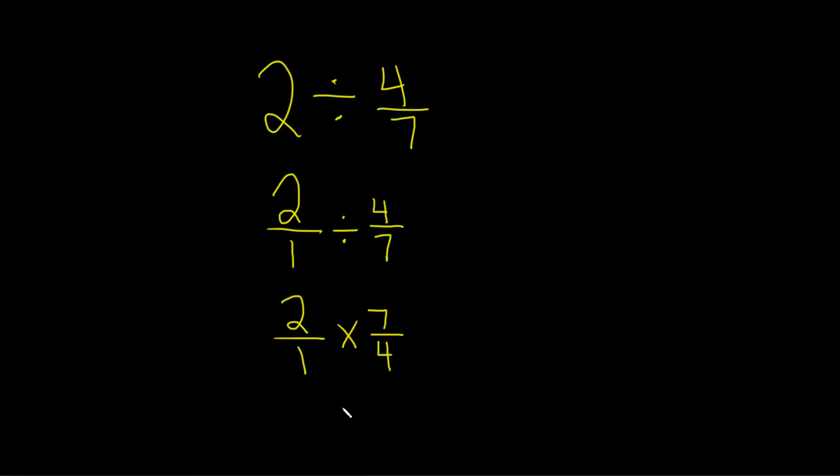And so now we look for cancellation with the cross terms. Nothing here can cancel with the 1 and the 7. But the 2 and the 4, I believe there is some cancellation. 2 goes into 2 one time, so I'll cross that out and put a 1. And 2 goes into 4 two times, so I'll cross that out and put a 2.